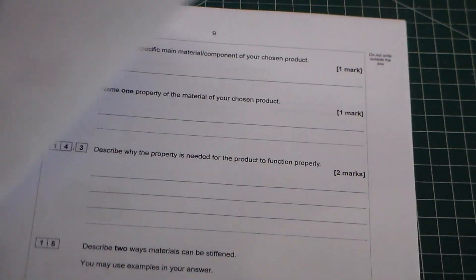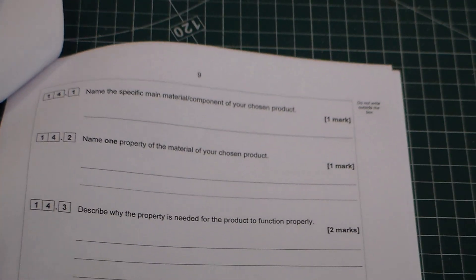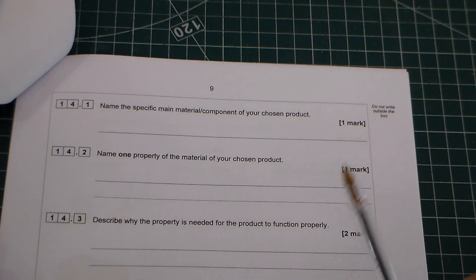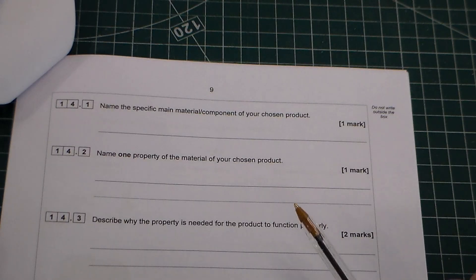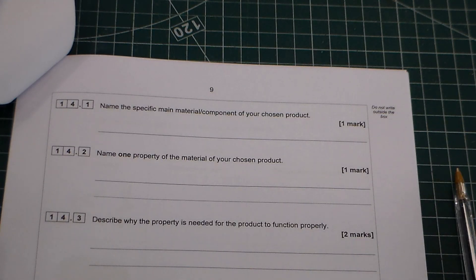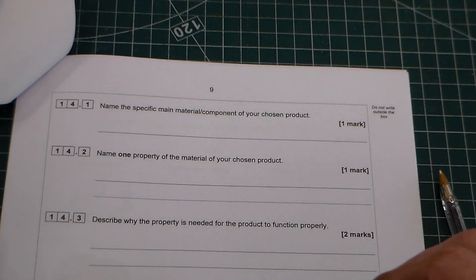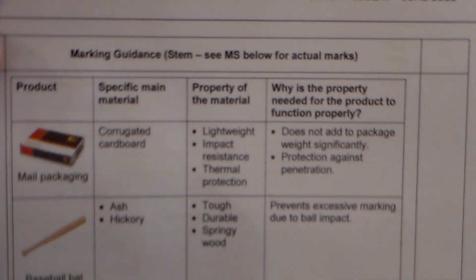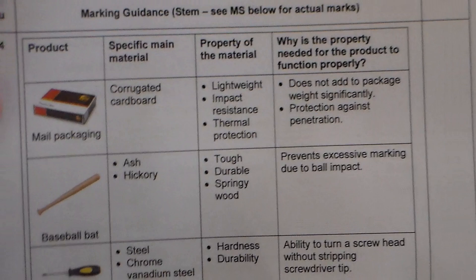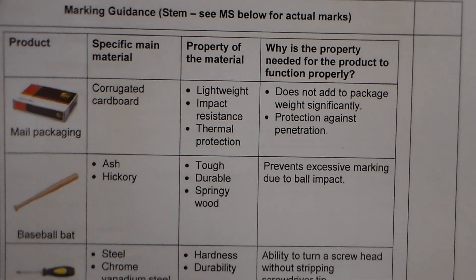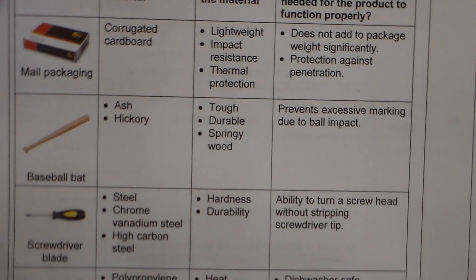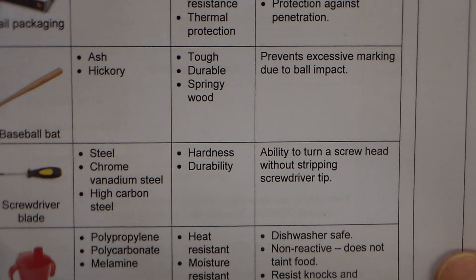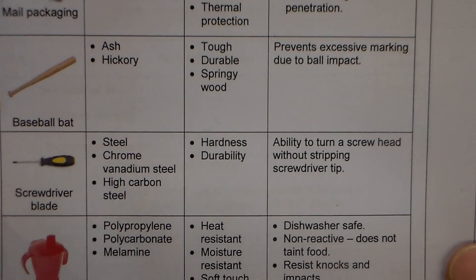When we turn over the page we can see the first question, and for one mark it says: name a specific material of the component of your chosen product. If it says specific material, it's really important that you name a specific material — please don't write 'wood' because you just won't get that mark. Looking at the mark scheme, for the baseball bat the answers are ash and hickory.